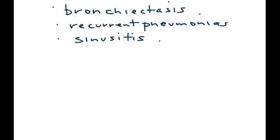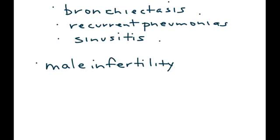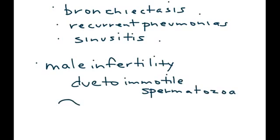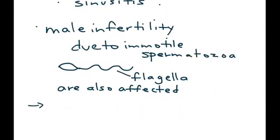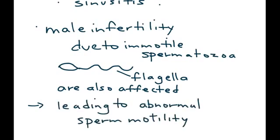In addition, you can also have male infertility, which is a very important aspect of the presentation. The reason is that in addition to cilia being immotile, you can also have immotile spermatozoa. The sperm's tail, known as the flagella, is also affected, and this leads to abnormal sperm motility. That is a very important aspect of Kartagener Syndrome in terms of its presentation and symptomatology.